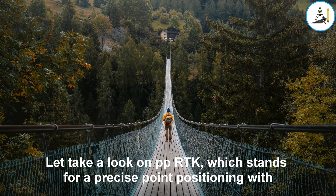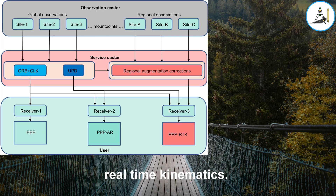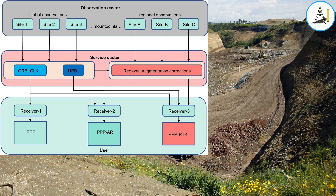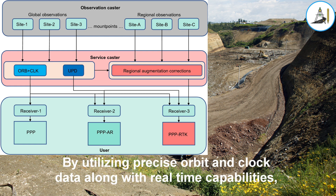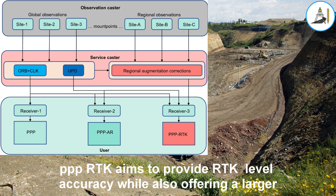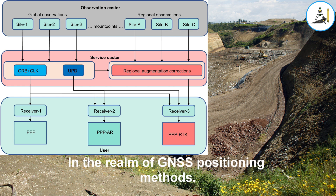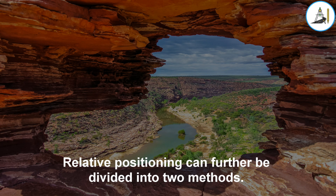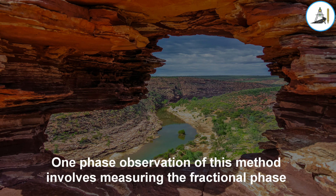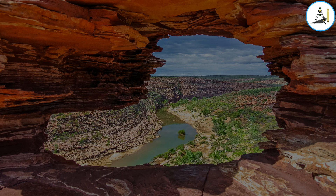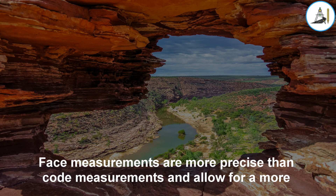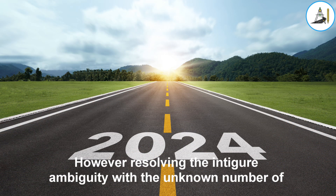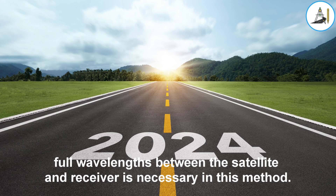PPP-RTK — Precise Point Positioning with Real-Time Kinematics — combines the advantages of both PPP and RTK to offer accurate positioning without the need for a nearby base station. By utilizing precise orbit and clock data along with real-time capabilities, PPP-RTK aims to provide RTK-level accuracy while also offering a larger coverage area. RTK falls under the category of relative positioning, which can be divided into two methods: phase observation, which involves measuring the fractional phase of the GNSS signal carrier wave and allows for more accurate determination of distances between GNSS satellites and receivers; and code observation, which utilizes the pseudorandom code transmitted by GNSS satellites to measure signal time delay.